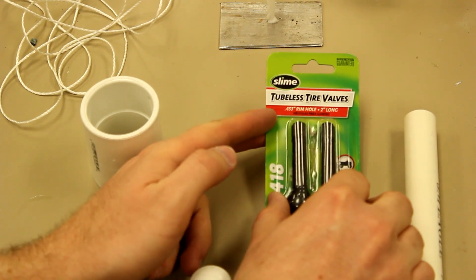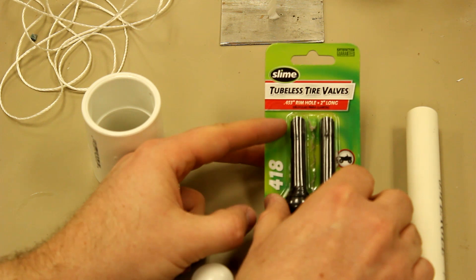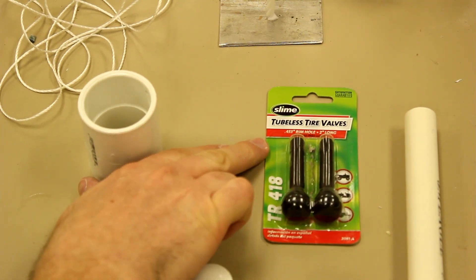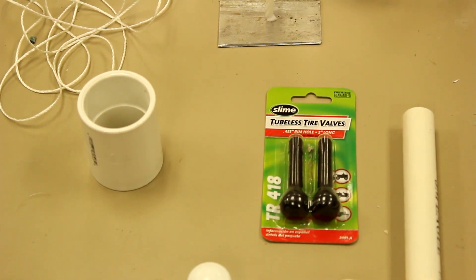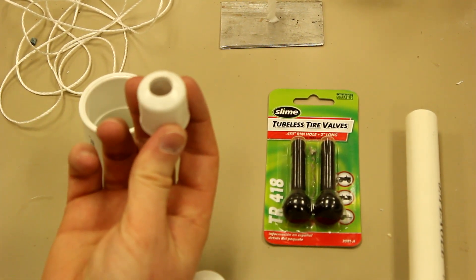Okay, and you want to make sure you get it in the .453 inch rim hole size. The length is unimportant but you want to make sure that its diameter is 0.453 so that it will fit easily through your end cap that you've drilled a one half inch hole in.